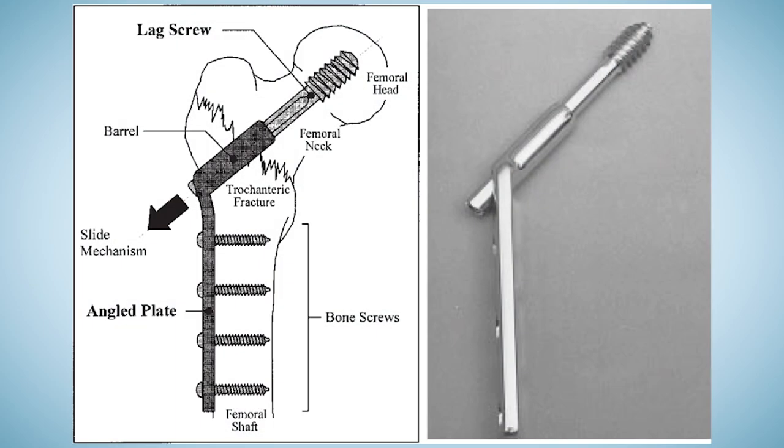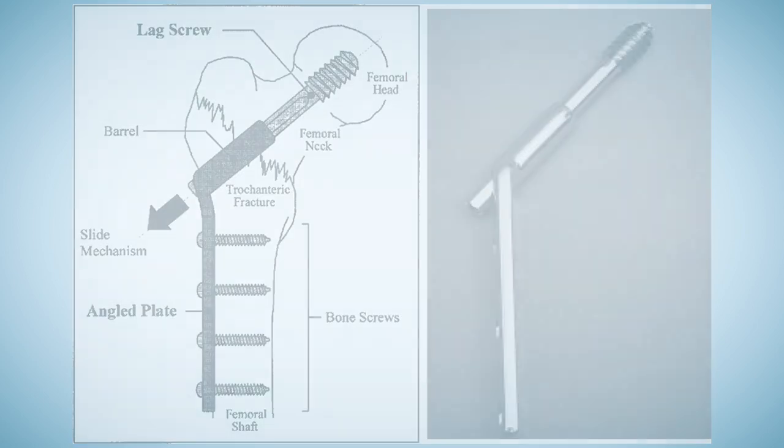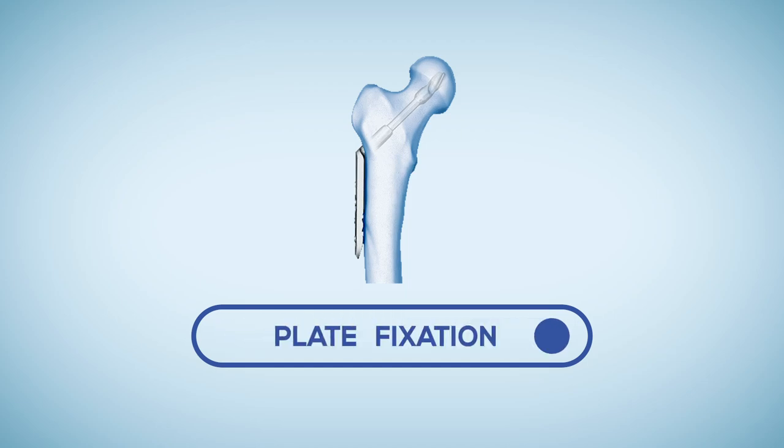This consists of a large screw placed in the head of the femur and a plate held on to the side of the femur by several smaller screws. We will now discuss the process in details.